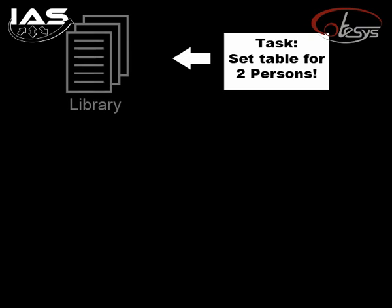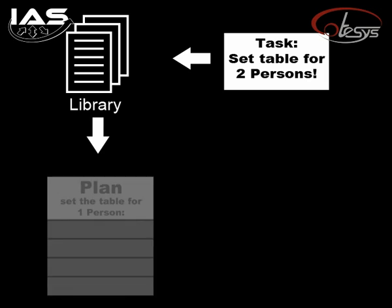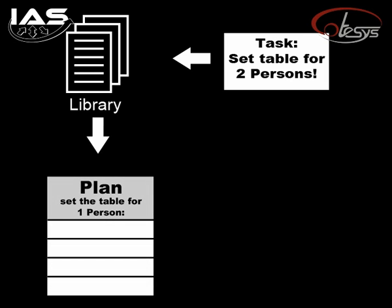If a new task like setting the table for two persons is assigned to the B21, first the library is scanned for an adapted plan. If there is no such plan, it must be created with a combination of existing sub-plans. Let's say there is a plan to set the table for one person with the following sub-instructions.